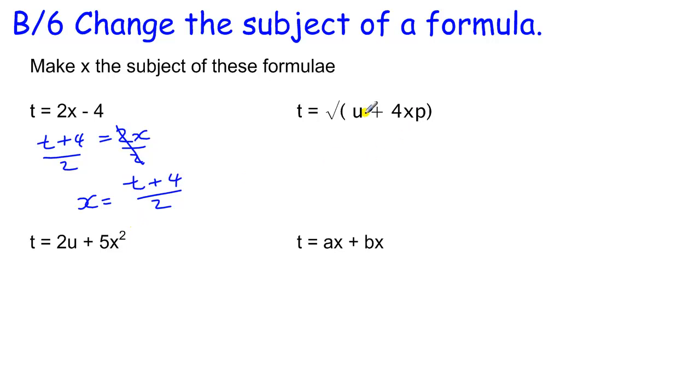Then if I look at this one, I've got a square root here. This should go all the way across the top here. To undo a square root, I need to square. So my first step would be to square both sides. If I square this side, I get t squared. If I square this side, that gets rid of the square root, so I end up with everything that's under the square root.